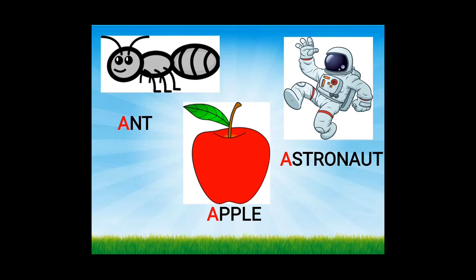A says A as in ant. A says A as in apple. A says A as in astronaut. Once again, we are going to do ant, apple, astronaut.